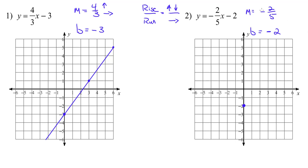Then we're going to move the way the slope tells us. Since this slope is negative, that means we're going to move down 2 and still right 5. You always move to the right. The only time you move to the left is if you run out of room and have to work backwards — I will show you an example of that. So you connect your points with a straight edge and extend all the way through. Here's our graph of y equals negative 2/5 x minus 2.